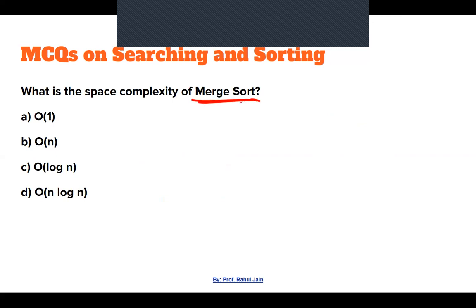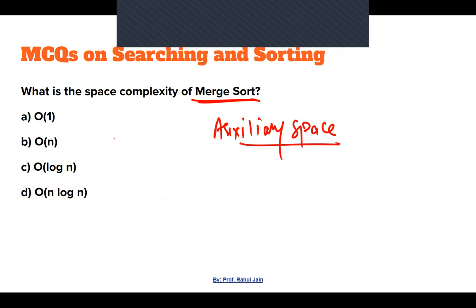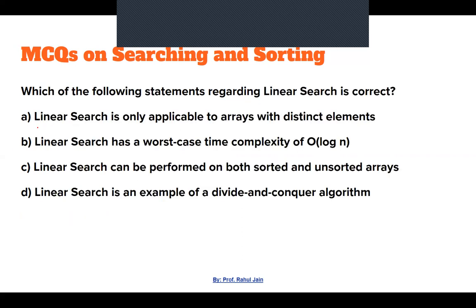Next: What is the space complexity of merge sort? The question is asking about auxiliary space. The space complexity is O(n).